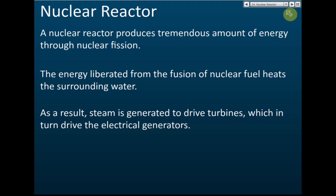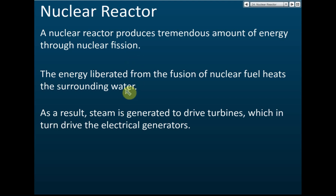Nuclear reactors in nuclear plants produce electrical energy. A nuclear reactor produces a tremendous amount of energy through nuclear fission - we do not use nuclear fusion because fusion is difficult to achieve and difficult to control. The energy released in nuclear fission is used to heat water, the water becomes steam, and the steam is used to drive the turbines of the generator.